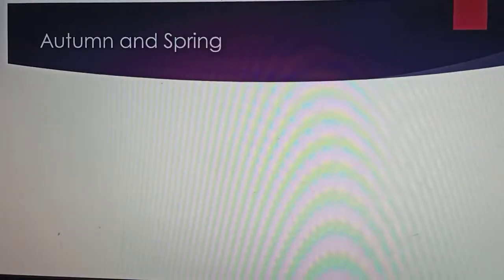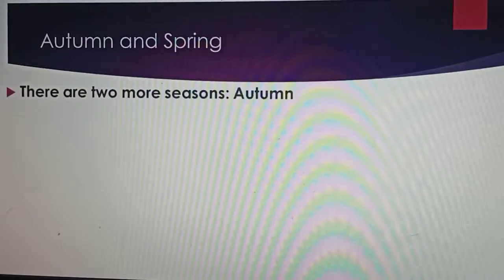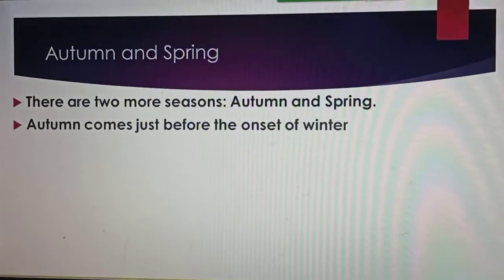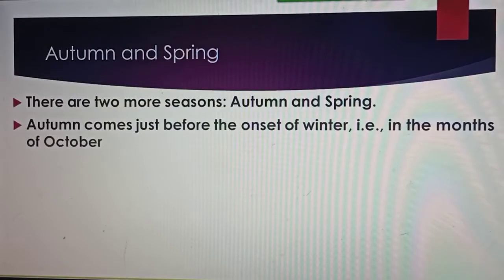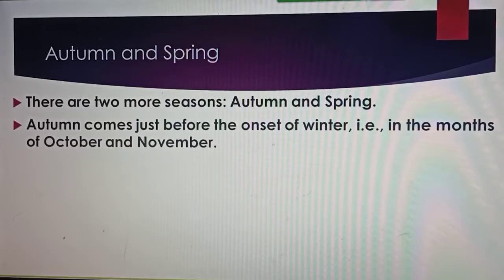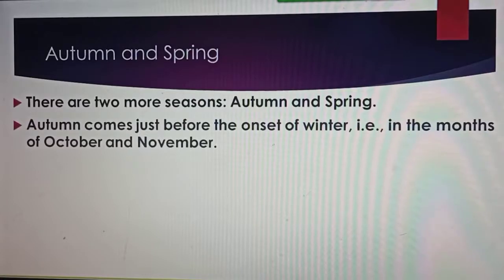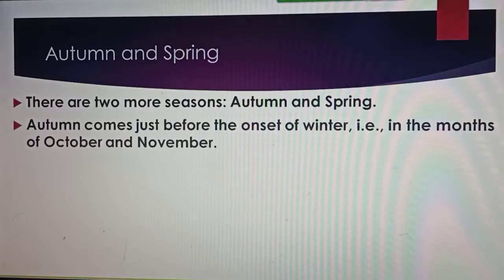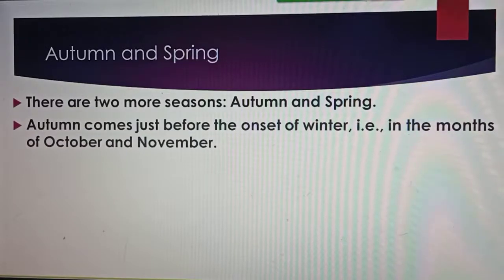Now, Autumn and Spring — there are two more seasons. Autumn comes just before the onset of winter, in the months of October and November. Autumn यानि पतझड़ का season, सर्दियों की शुरुआत से ठीक पहले आता है — October and November के months में.